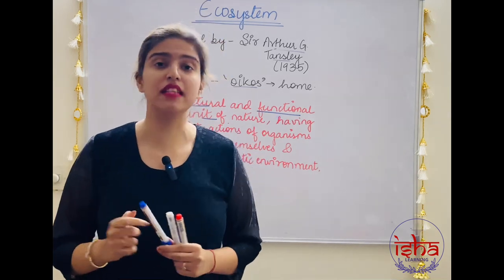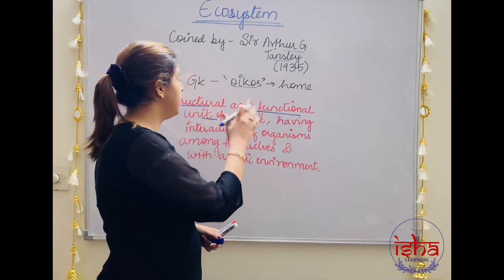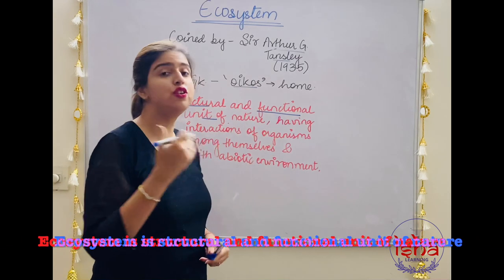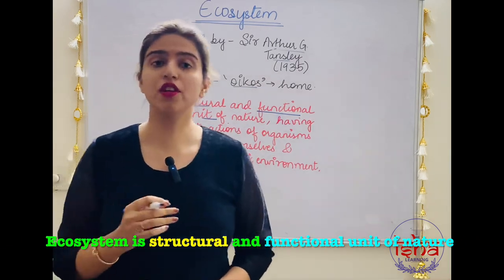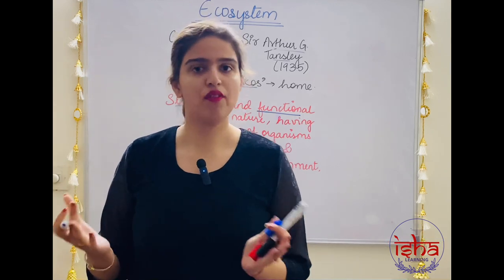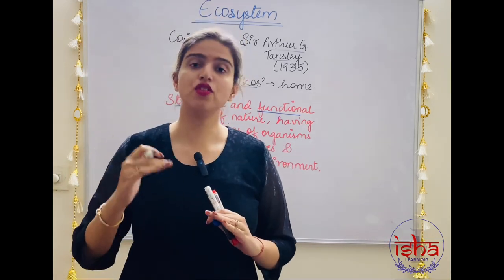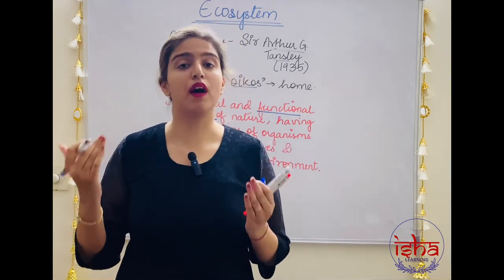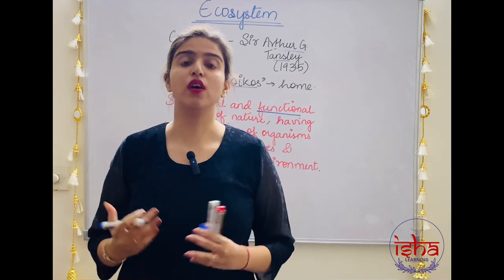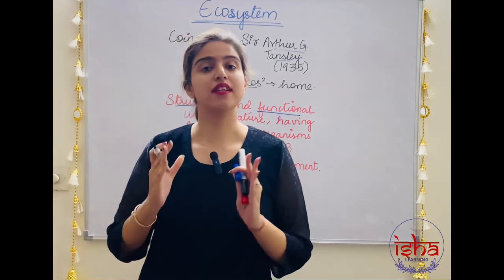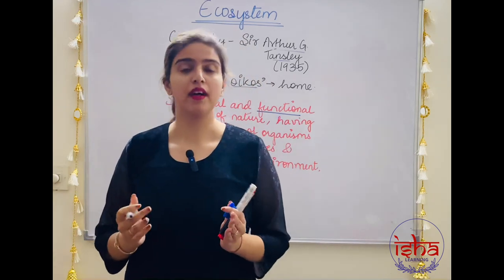How can we define this term? Ecosystem is a structural and functional unit of nature. It's called a structural unit because, let's say there is a forest ecosystem — in a forest, different trees and different plants occupy different levels. This is called stratification. So there is a defined structure for an ecosystem.